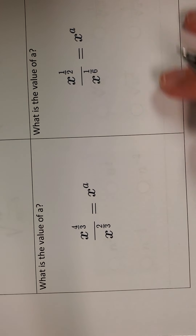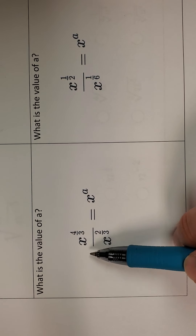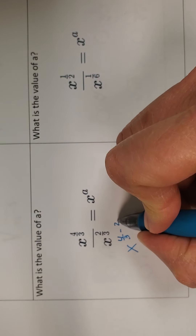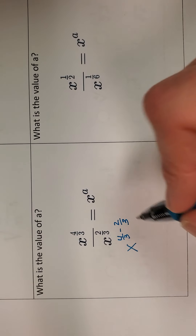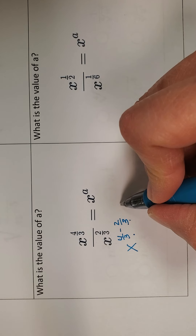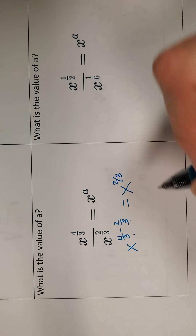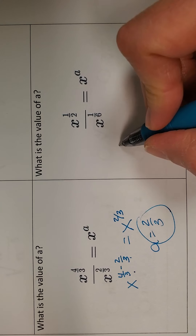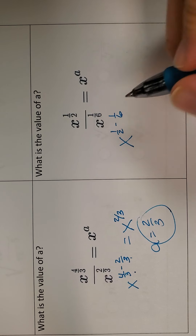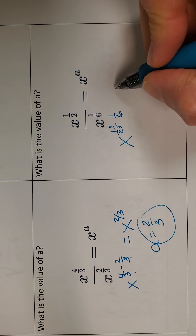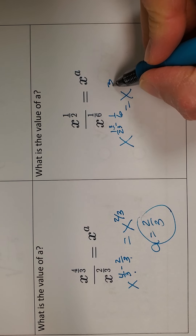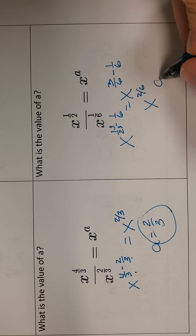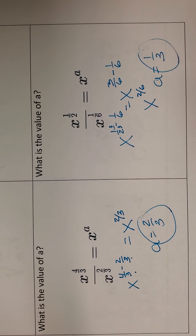Two more, then we'll go to the next section. Division is happening, so I subtract exponents. Nicely, I get a common denominator right away: 4 thirds minus 2 thirds is 2 thirds, so a is 2 thirds. Finally, I'm dividing again, so I subtract: x to the 1 half minus 1 sixth. The common denominator is 6, so I get 3 sixths minus 1 sixth, which gives 2 sixths. That reduces to 1 third, so a equals 1 third.